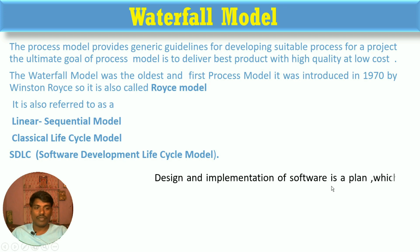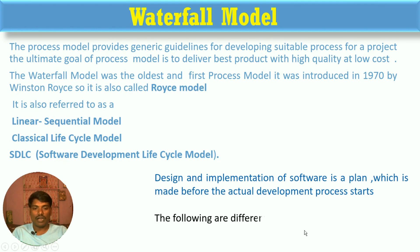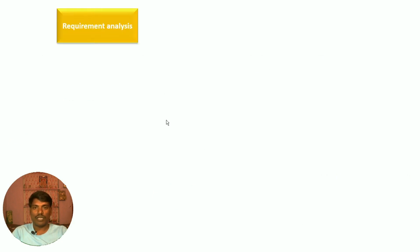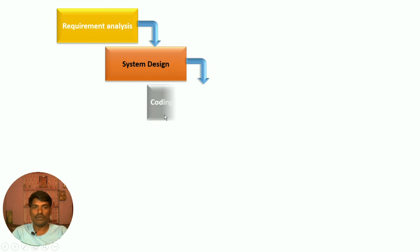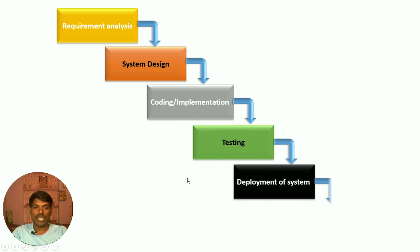The design and implementation of the software is planned before the actual development process starts. The six phases are: first, requirement analysis; second, system designing; third, implementation and coding; fourth, testing; fifth, deployment of the system; and sixth, maintenance.